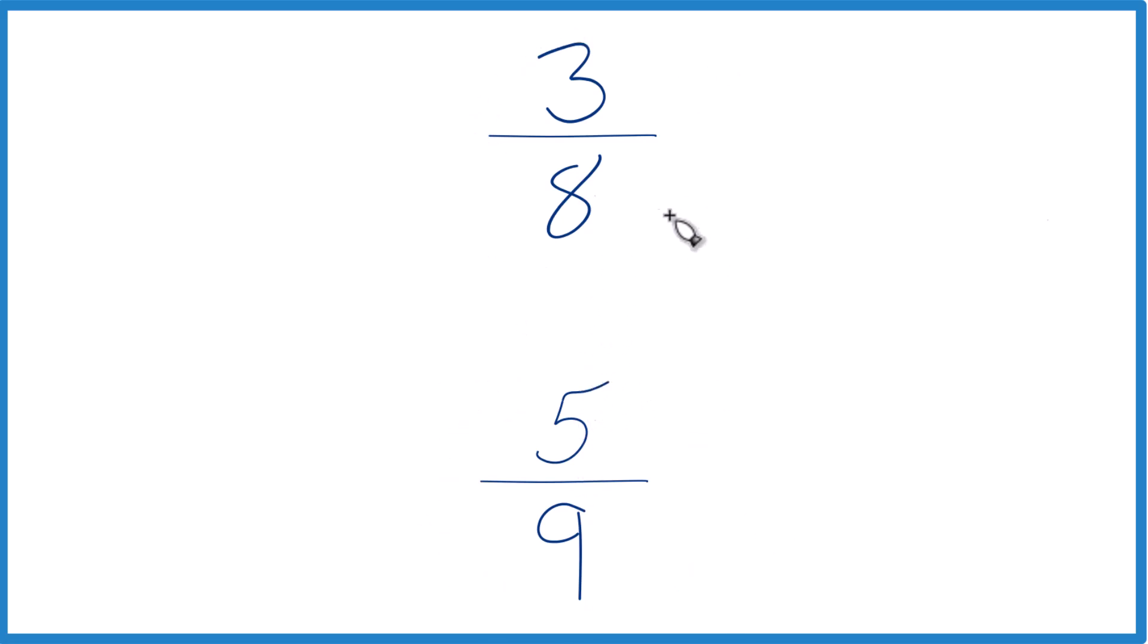You could just, on a calculator, take 3 and divide it by 8, get a decimal, divide 5 by 9, get a decimal, and compare them. And that would tell you which is larger, 3 eighths or 5 ninths.